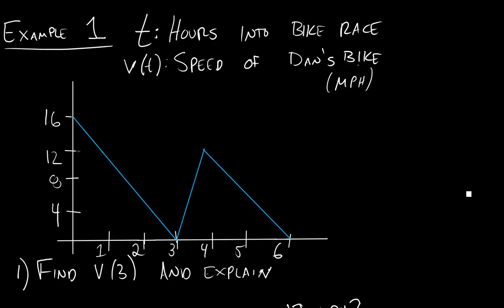We have a little bit left from section 1.1 about evaluating functions, interpreting what those things mean, and even about possibly creating some of our own functions. Let's start with this function here. It's a graph of a function I've made up, and the input that this function is taking is the number of hours I've been in a bike race. The output is how fast I'm going at that point in the race.